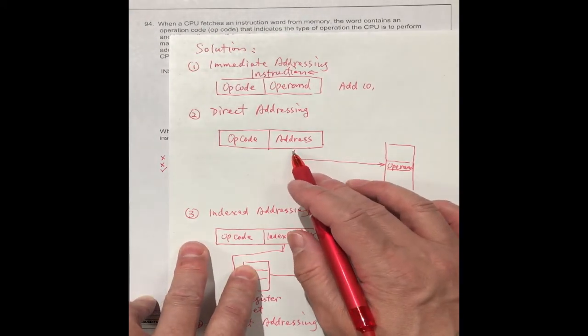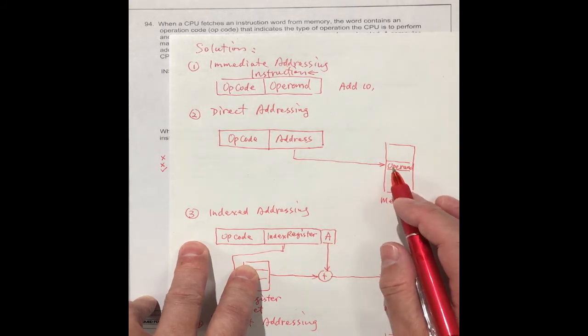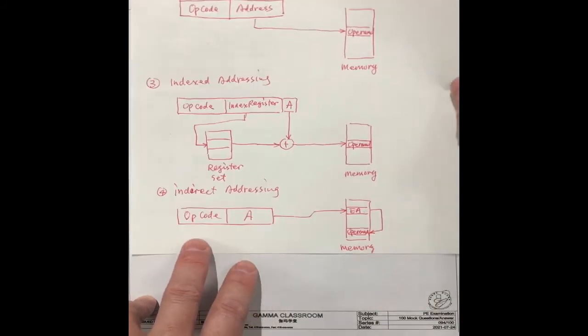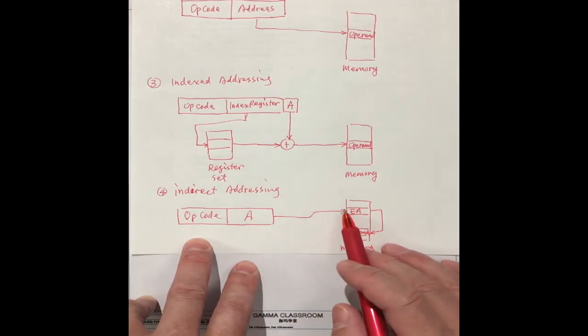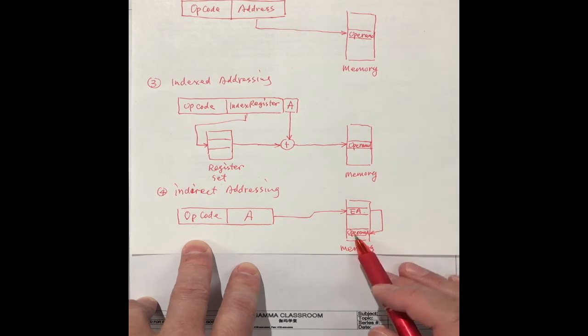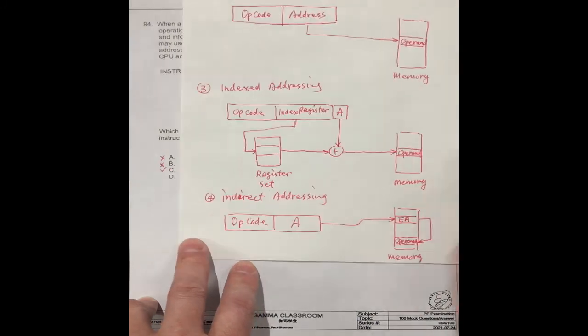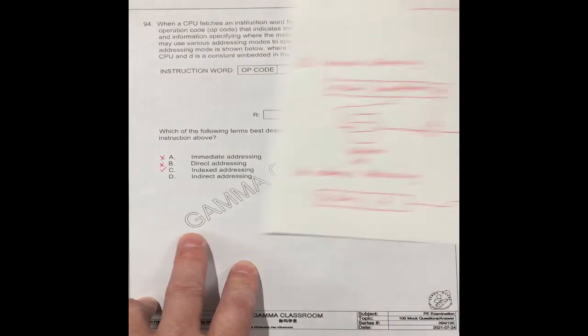It's different with the direct address. Direct address from the address finds the operand directly. And the indirect finds the effective address first, then finds the operand in the memory. So this is different. But this is different from our question.